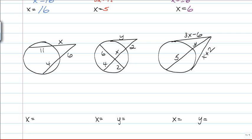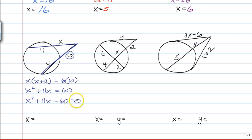The first one was an example of secant-secant. Outside times the entire secant is equal to the outside times the entire secant. Distribute: X squared plus 11X is equal to 60. Since you have X squared, X, and a constant, you bring everything over to one side and set it equal to 0. You're going to get an X minus 4 and an X plus 15. That will multiply to a negative 60 and add to 11. Which means your answers are 4 and negative 15.